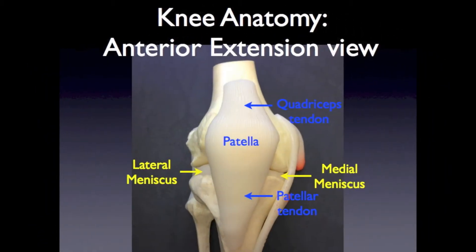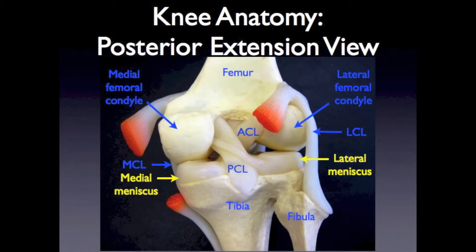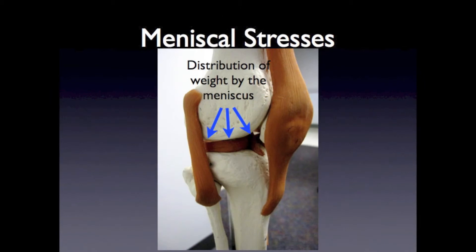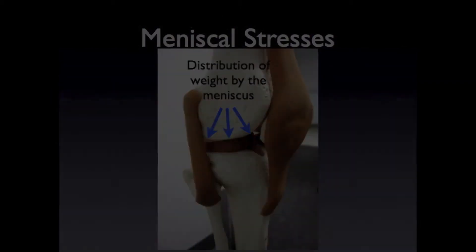On the anterior view of the knee, you can see the medial and lateral menisci between the femur and tibia. They are again visible from the posterior view. This diagram shows how the menisci assist with weight distribution through the joint.